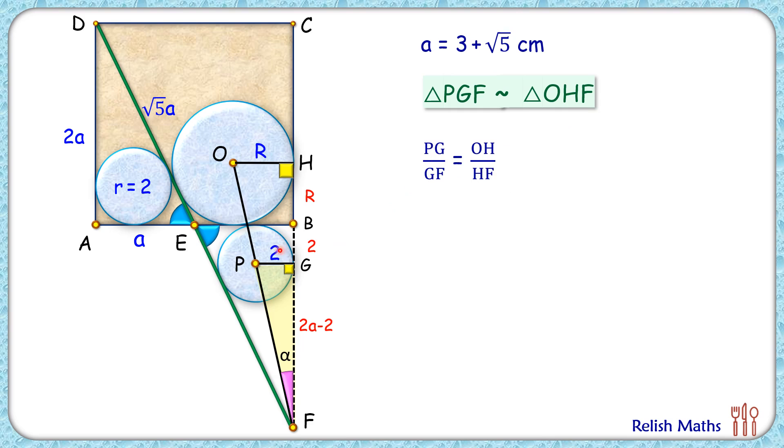Here the length PG is 2 and GF is 2a - 2, and OH is R and HF - HF is this full length which is a + R. BF is a and HB is R, so this is R upon 2a + R. Now here we'll cancel 2 in the numerator and denominator, so LHS will be 1 upon a - 1.